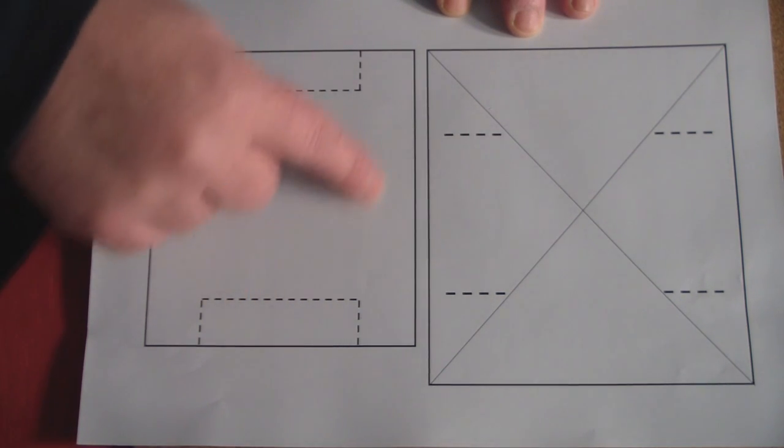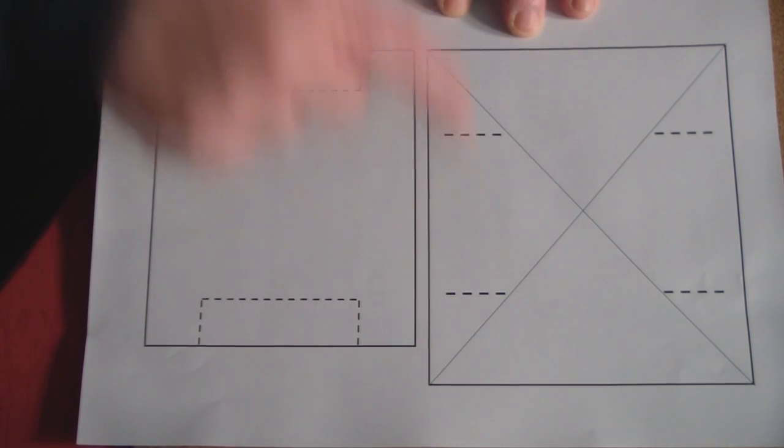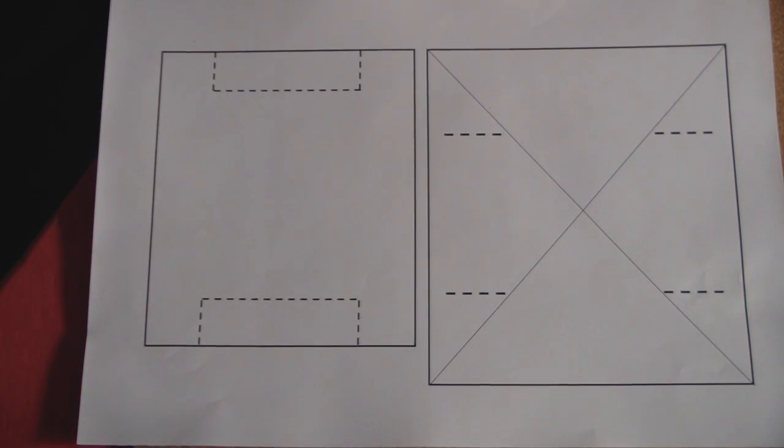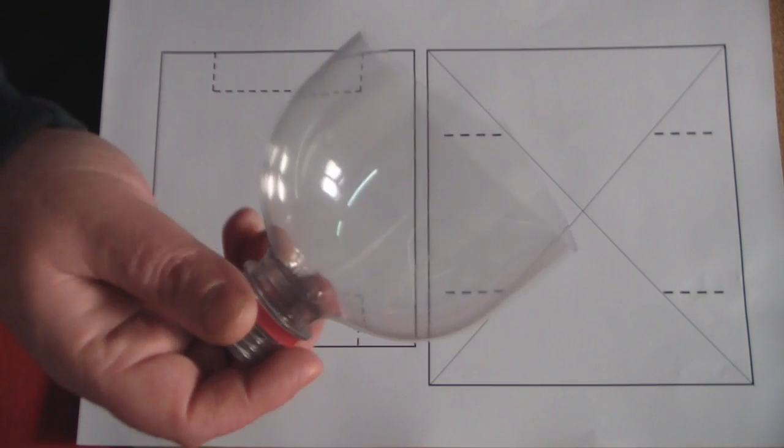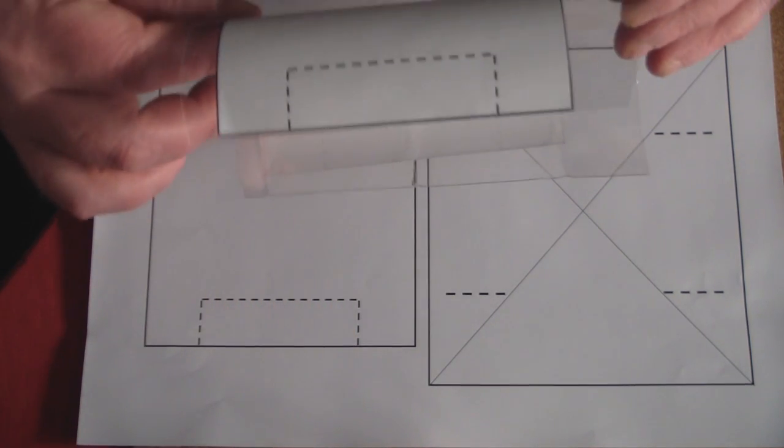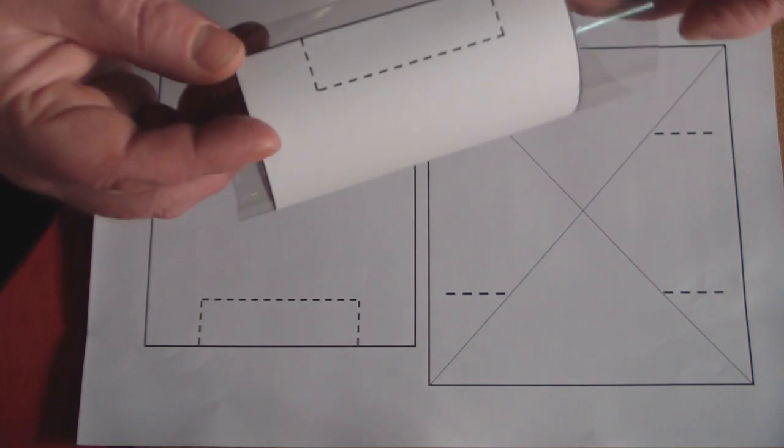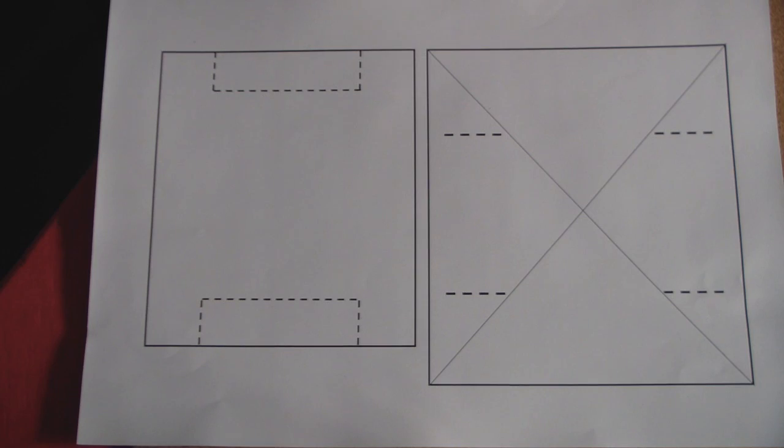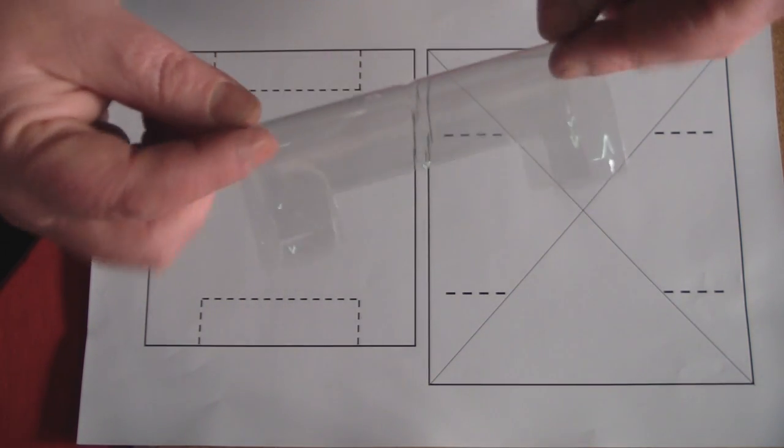And this one is for the plastic cover to protect the driven element. If you get yourself one of those two liter bottles of fizzy drink and stick that template to the side, you can cut around it and you will end up with that.